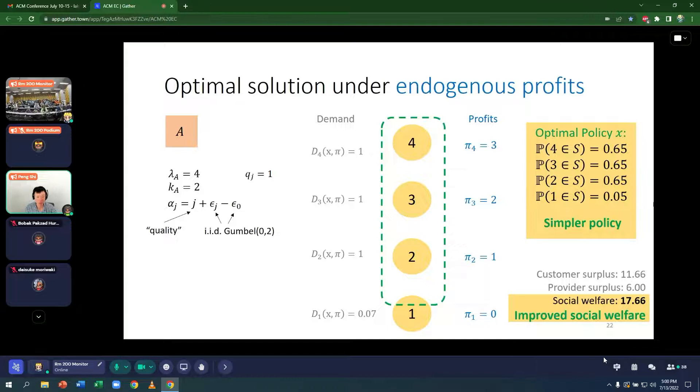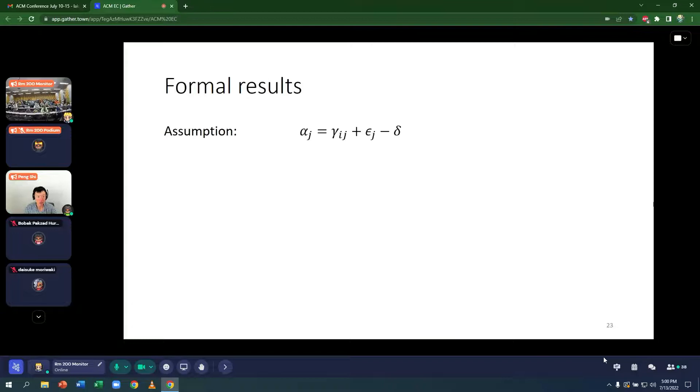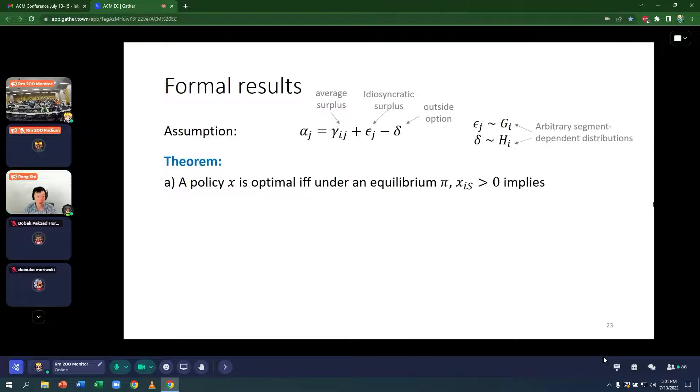Let me just spend one last slide to state the formal results. Assume that surpluses follow this form where it's a generalization of the previous numerical example. We have a gamma_ij term, which is the average surplus of provider j to segment i. And these idiosyncratic surplus and outside options can be distributed according to arbitrary segment dependent distributions. It doesn't have to be the Gumbel distribution, normal, uniform, anything you want.